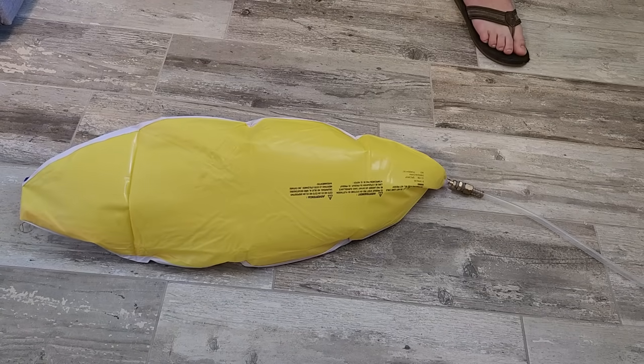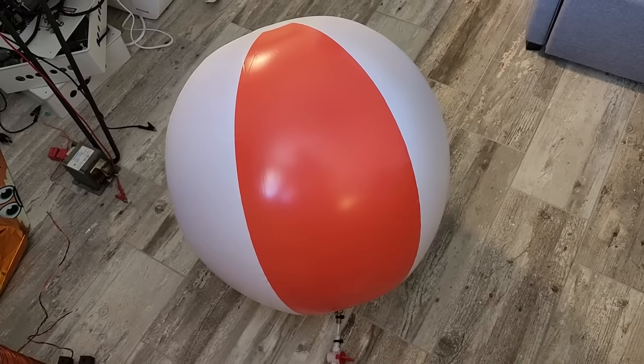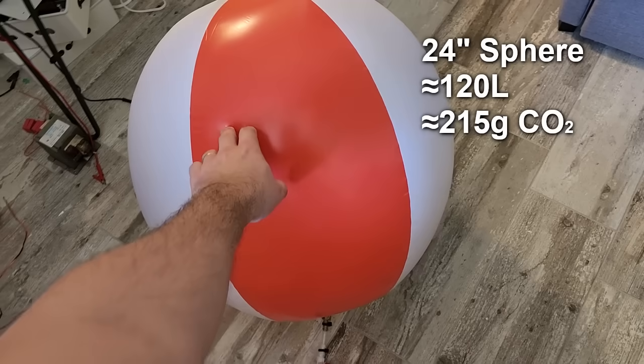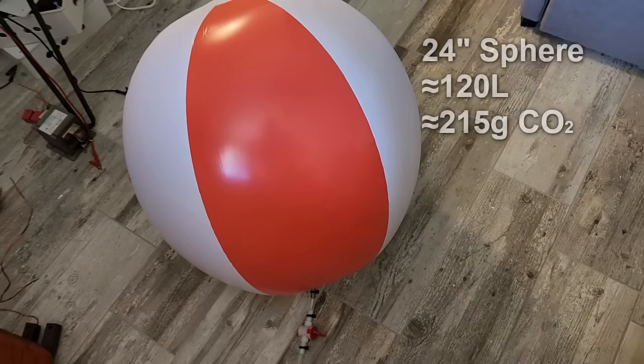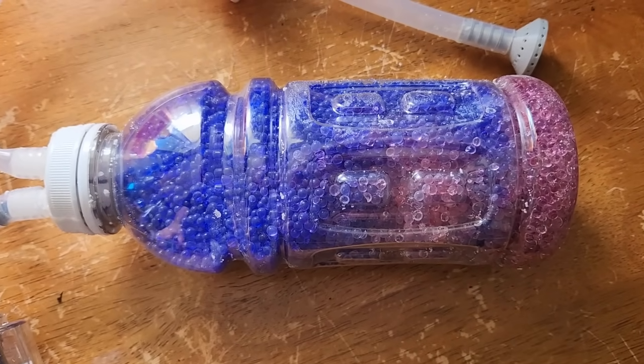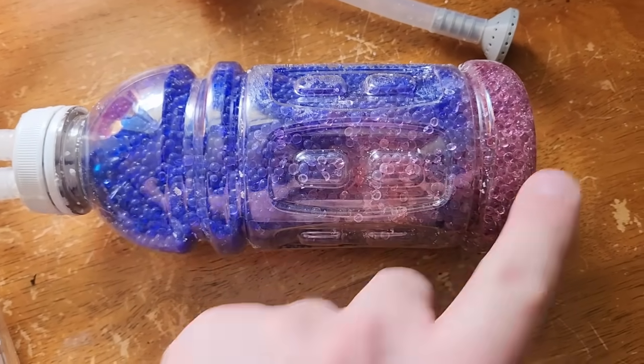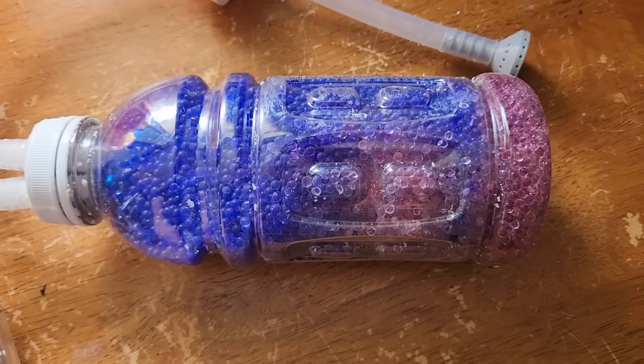As the reaction progresses, I can see the ball start to fill. At full inflation, the beach ball has a diameter of 24 inches, which equates to roughly 120 liters of volume, which is about 215 grams of CO2 gas. As you can see from the color change in the desiccant, there's quite a bit of moisture being removed from the gas stream. We want to minimize moisture, because when we get down to dry ice temperatures, it'll instantly freeze and cause blockage in valves and pipes.